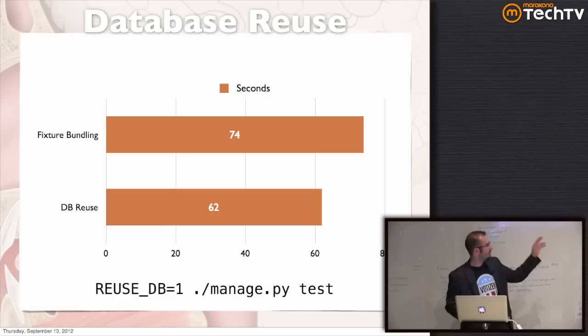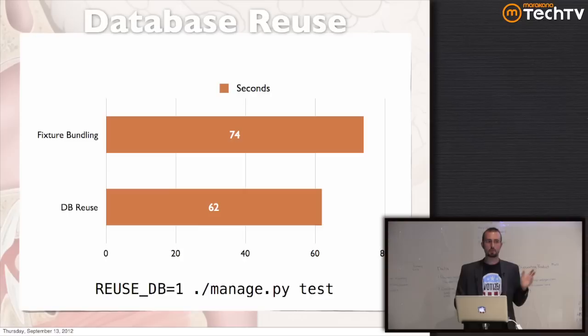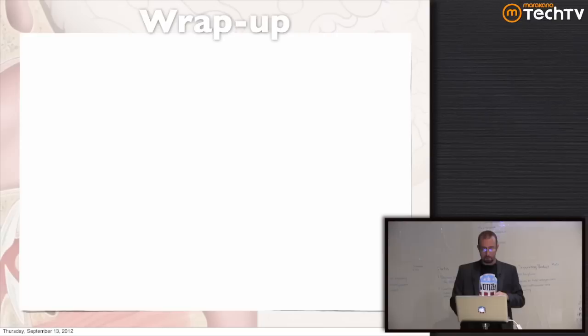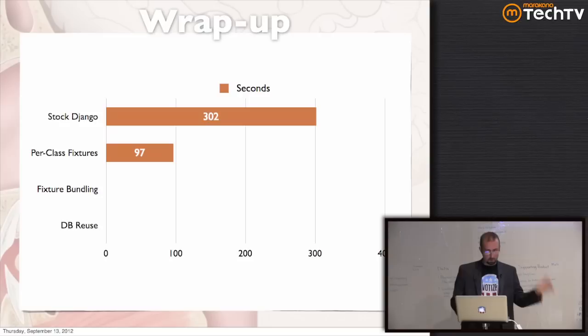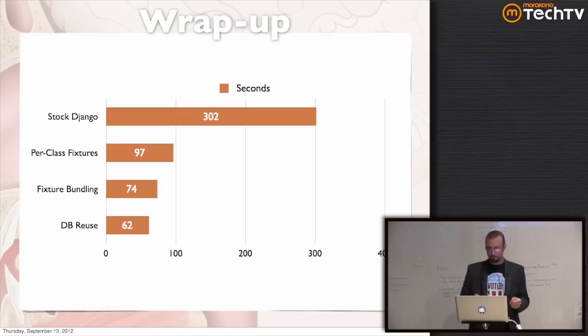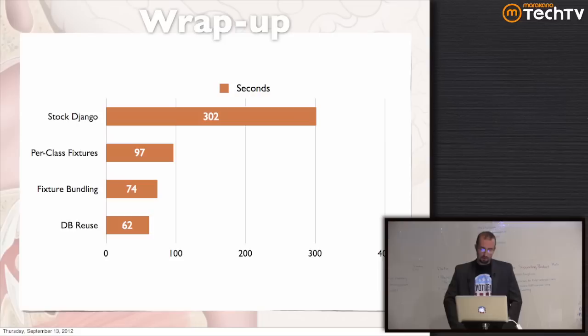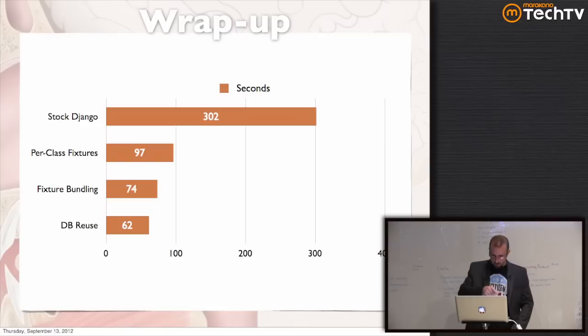The flag for database reuse is a bit odd — because of the way test runners call each other, I couldn't make it a proper argument yet, so it's an environment variable. You have to manually omit it if you make schema changes. But otherwise you save about 10 seconds of database setup time. That gets us within a whisker of a minute for that project. Here's a summary: the per-class fixture loading is the big win, fixture bundling knocks another quarter off of that, and database reuse takes off that last 10-second annoyance. If that saves four minutes per run for a team of four running tests four times a day, you save about an hour a day — 261 hours or 32 working days per year.